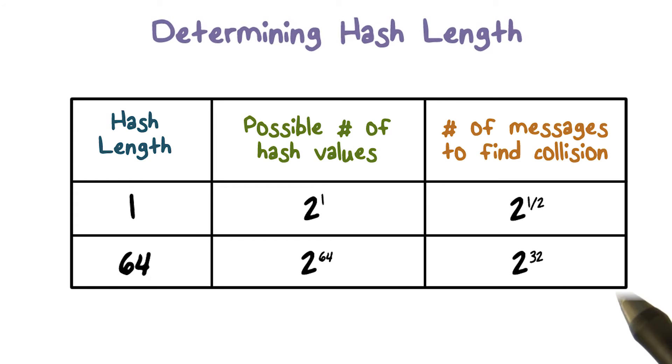This is quite feasible with today's computing power. Therefore, we need the hash value to be longer than 64 bits. In hash functions, the hash value is at least 128 bits.